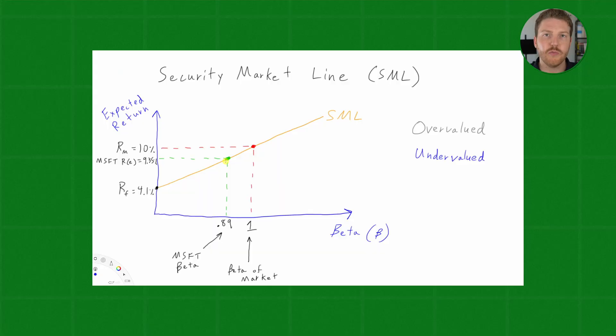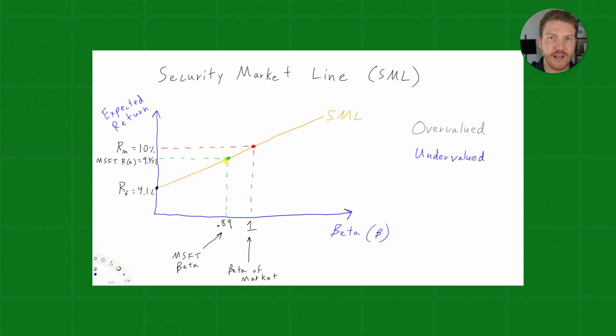But is Microsoft correctly valued? To answer that question, let's assume that we have used a ton of different valuation techniques, and we have determined that we actually expect Microsoft to return 11%. So, that would really plot in right here because the beta is still 0.89, but our expected return is now 11%. So, we are expecting to get more return for the same level of risk, which is good for us if we invest in Microsoft. So, in this case, we would say that Microsoft is undervalued.